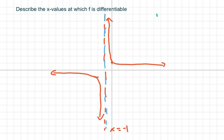f of x is differentiable everywhere except at x equals negative 1, because we have a vertical asymptote there. So, everywhere but here.